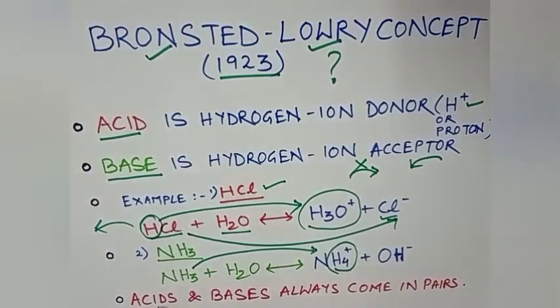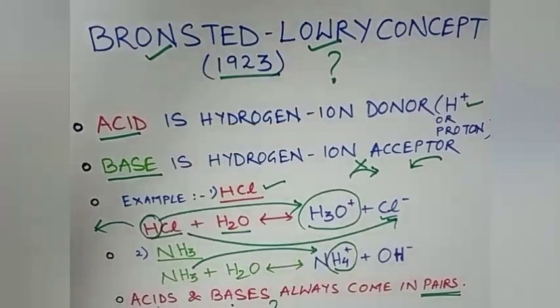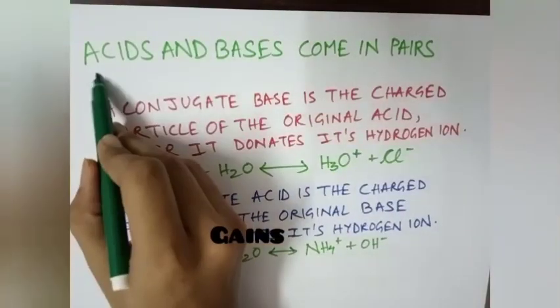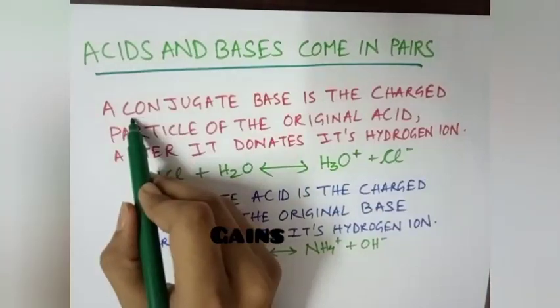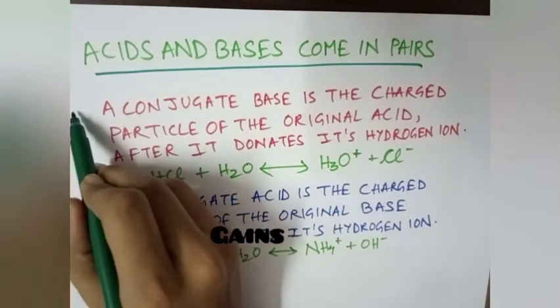Next thing is acids and bases always come in pairs. What does this mean according to Bronsted-Lowry concept? This Bronsted-Lowry concept of acids and bases coming in pairs is the concept of conjugate acid and conjugate base.